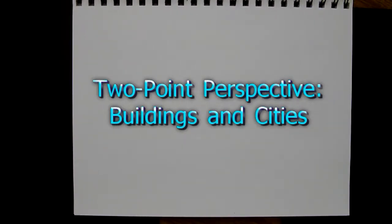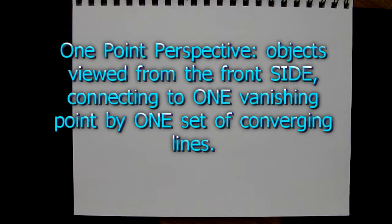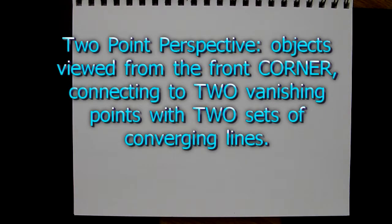In one point perspective, you learned how to draw things as though viewed from the front side and diminishing to a single vanishing point with converging lines. In two point perspective, you're viewing objects from the front corner rather than the front face, and your objects recede towards two vanishing points, two sets of converging lines.